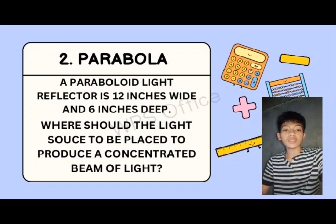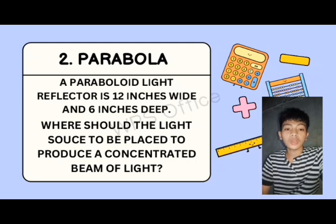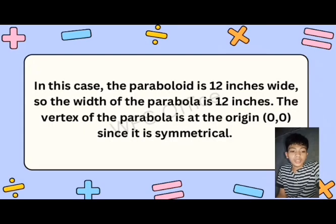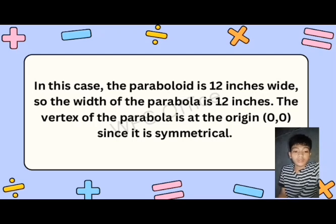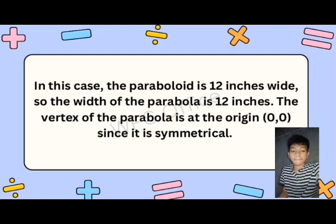Problem 2: A paraboloid light is 12 inches wide and 6 inches deep. Where should the light source be placed to produce a concentrated beam of light? The paraboloid is 12 inches wide, so the width of the parabola is 12 inches. The vertex of the parabola is at the origin (0, 0) since it is symmetrical.